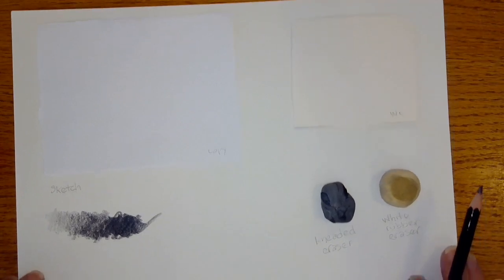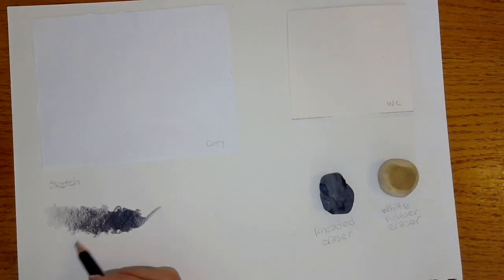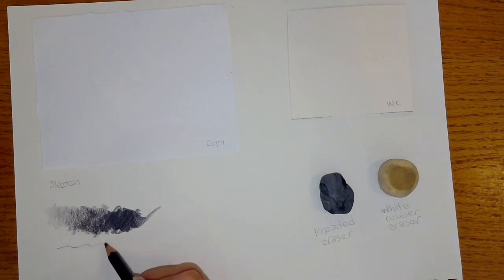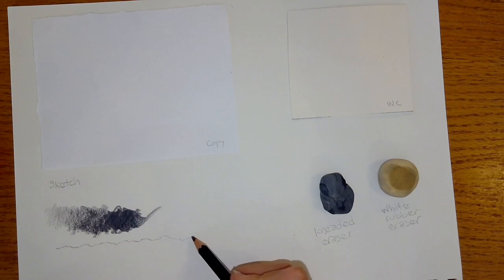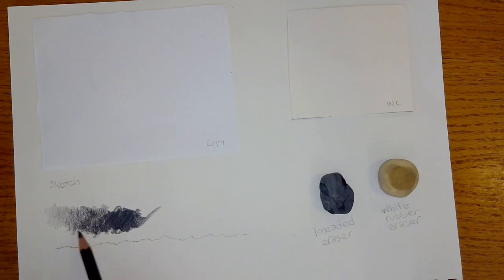So what you're actually seeing happen here is the surface of papers, depending on how toothy they are. This is not a scientific rendering, by the way, of the surface of paper.